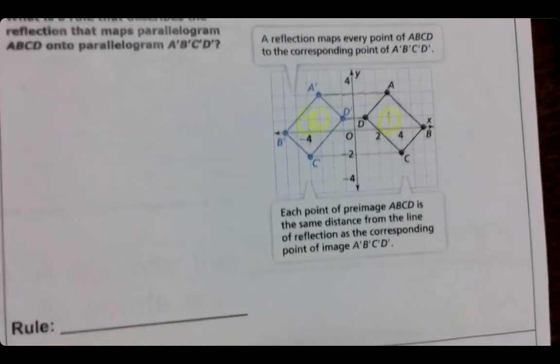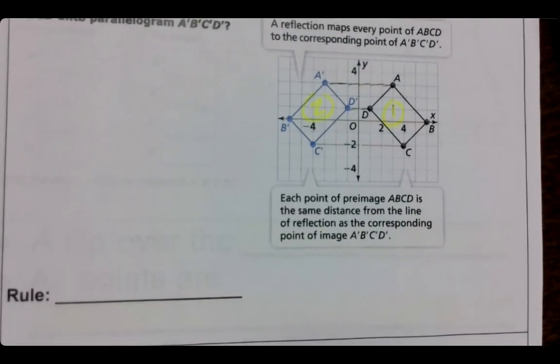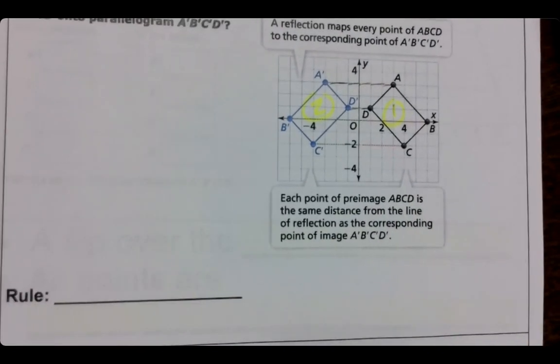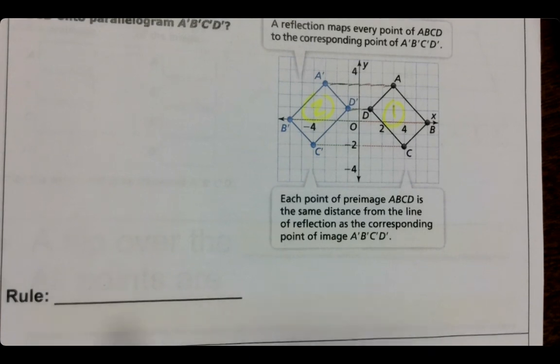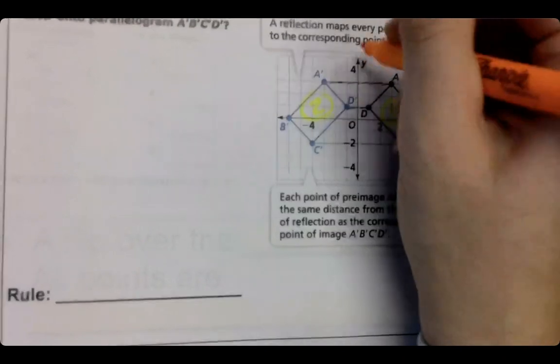So it says write the rule. So remember in the other one, our line of reflection was the x-axis, so that's why we highlight it. What would it be for this one? What would be our line of reflection? What's the middle of those two shapes? The y-axis.